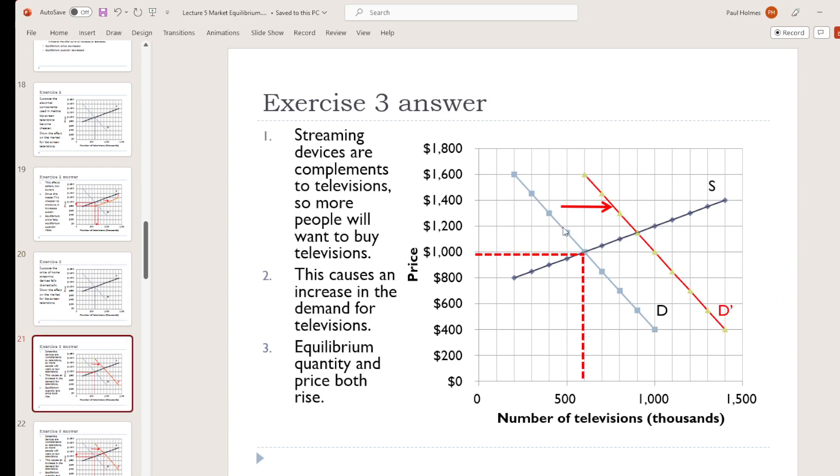So I'm shifting my demand curve to the right. Admittedly, I made this a giant change, a completely unrealistic increase, but go with it. I wanted a big arrow this time.